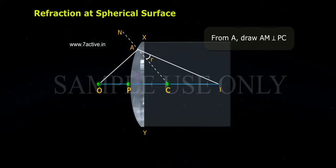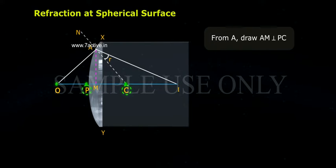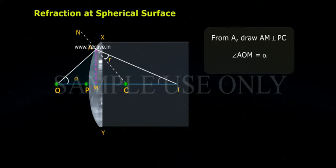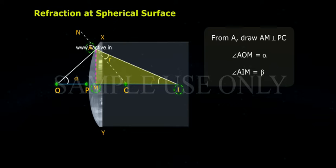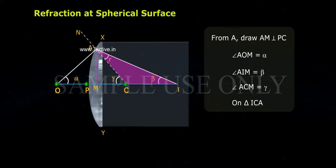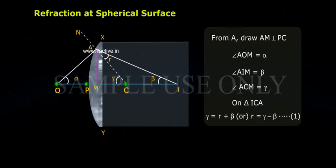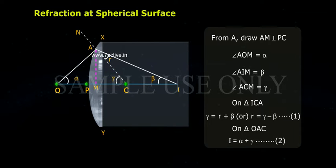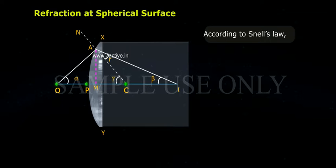From A, draw AM perpendicular to PC. Angle AOM equals Alpha. Angle AIM equals Beta. Angle ACM equals Gamma. In triangle ICA, Gamma equals R plus Beta, or R equals Gamma minus Beta. In triangle OAC, I equals Alpha plus Gamma — equation 2.